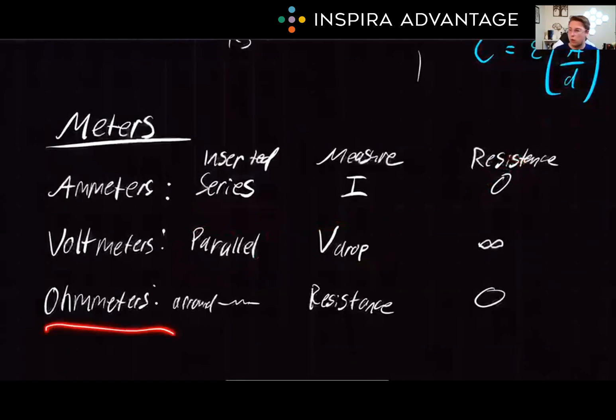And finally, ohmmeters. Ohm, we're referring to Ohm's Law, and they are going to measure the resistance in the system, and we do this by inserting them around the resistor itself to see. And these have zero resistance, which should make sense. If our ohmmeter had resistance, well, then we wouldn't be measuring the resistance in the system. We'd be introducing resistance, and that just doesn't make sense.